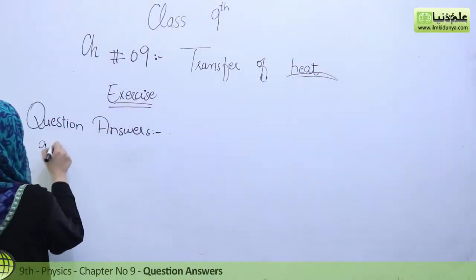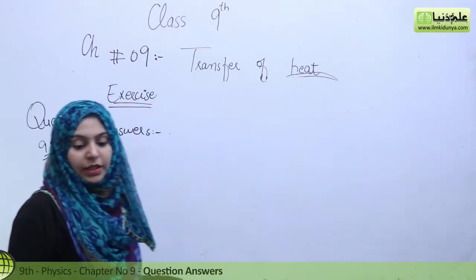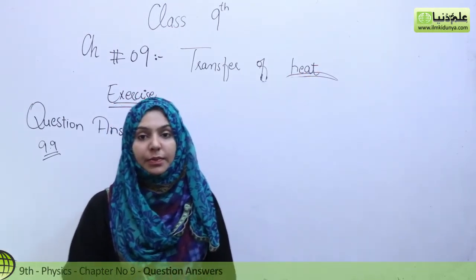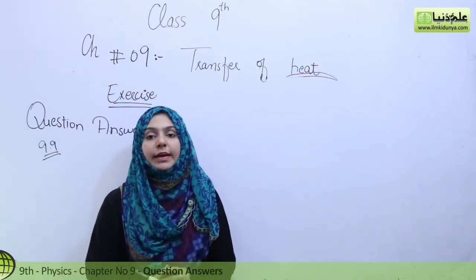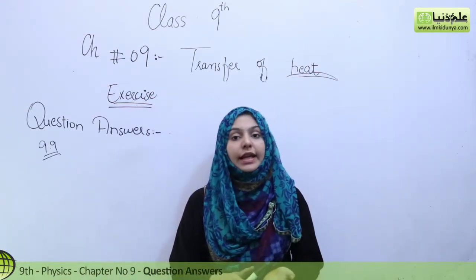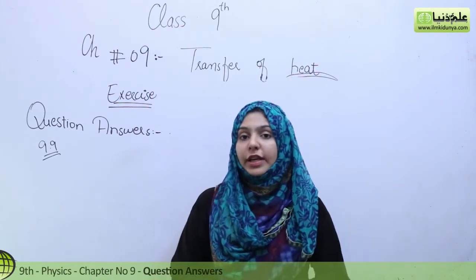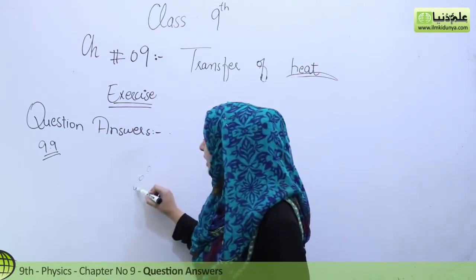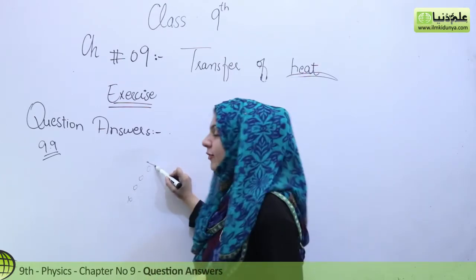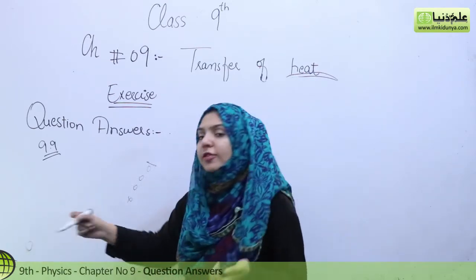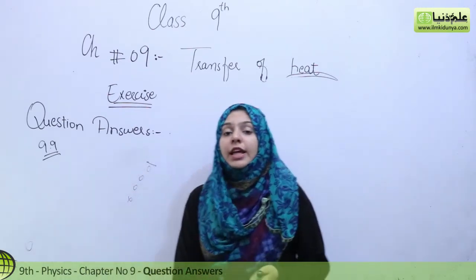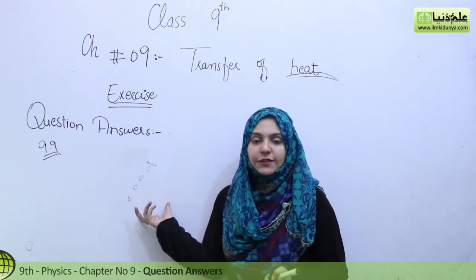Question number 9.9: How does heat reach us from the Sun? First, let's consider conduction. In conduction, free electrons and atoms transfer heat, but they can only transfer heat over a short space. If electrons or atoms were hot here, by the time they travel a great distance they would become cold, automatically providing their energy to something else. So conduction cannot be used to transfer heat from the Sun to Earth.